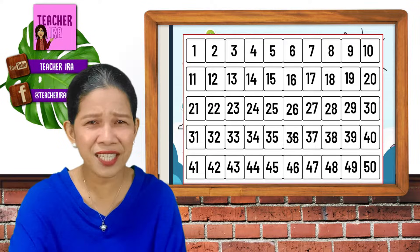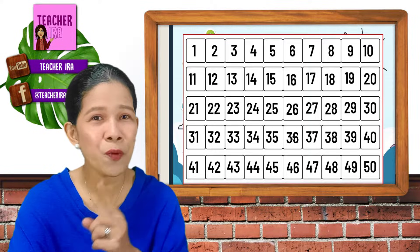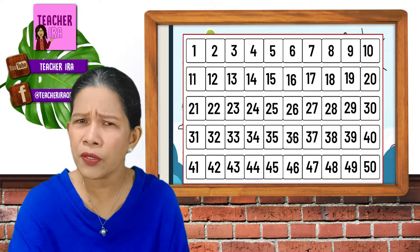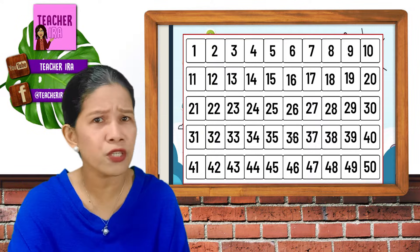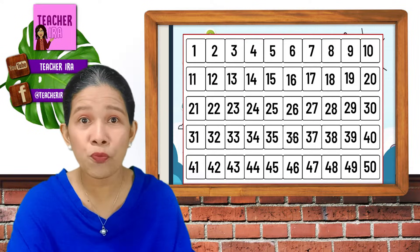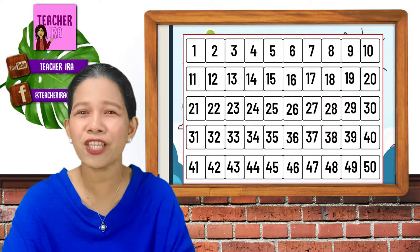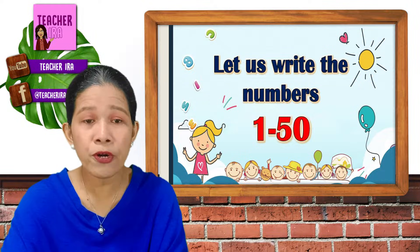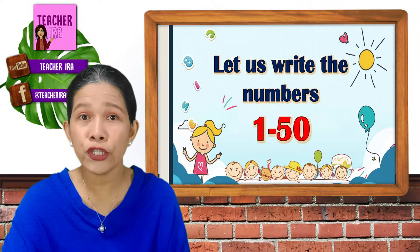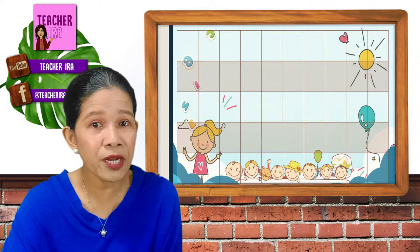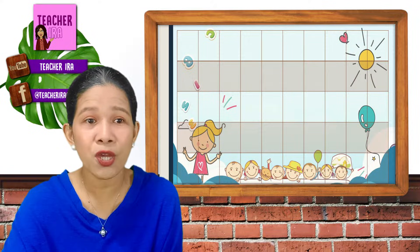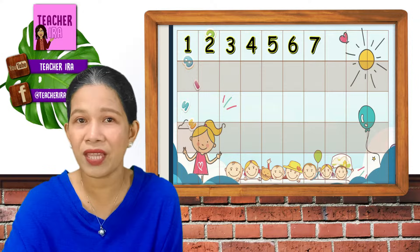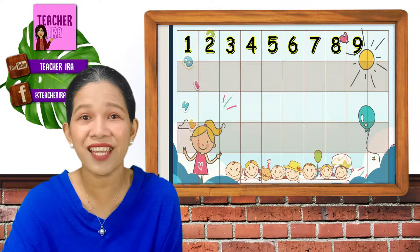Wow! Isn't it amazing? I hope that with that, you would now know that counting numbers is just very easy. How much more with writing? Now, let us try to write more. Here, let us write the numbers 1 to 50. Like what we had learned a while ago, we will just write 1, 2, 3, 4, 5, 6, 7, 8, 9, and 10.